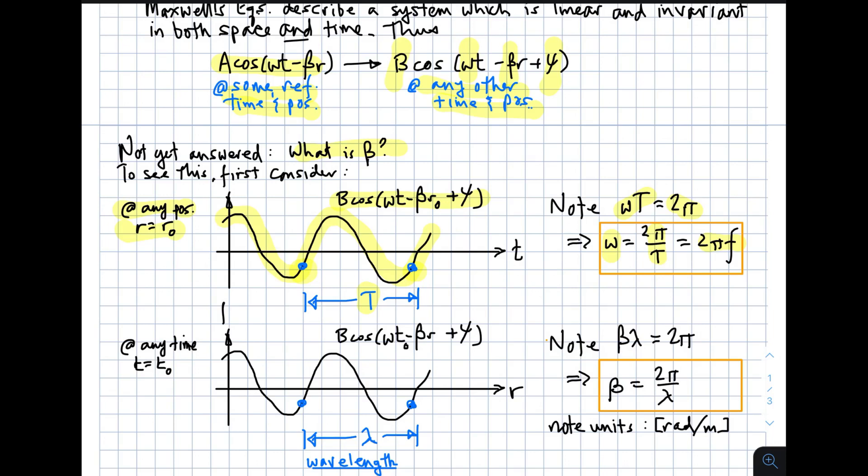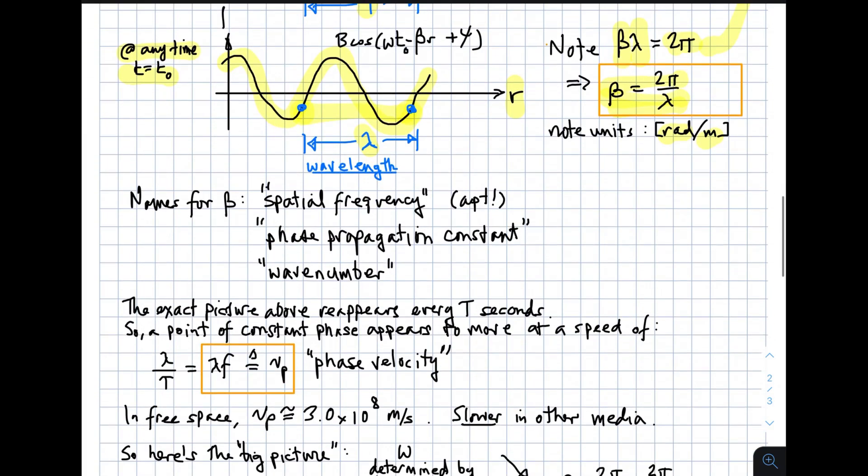But you can do the exact same analysis in the spatial domain. You can look at any one time, any one moment in time, and then consider what the wave form looks like as a function of distance. And then once again, you get a sinusoid. And then once again, there is something analogous to the period, which describes the distance between two points of equal phase. And that is the wavelength, given by the symbol lambda. And beta times lambda must be 2 pi, just as omega times T must be 2 pi. So beta is 2 pi over lambda. I'll ask you also to note the units here. Beta must have units of radians per meter, just as omega had units of radians per second.